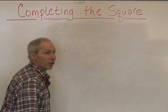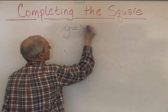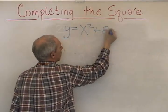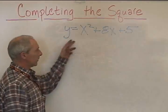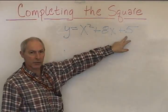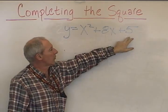The first equation is y is equal to x squared plus 8x plus 5. Okay, in this form, we have the y-intercept information here. For this parabola, the y-intercept is 5.